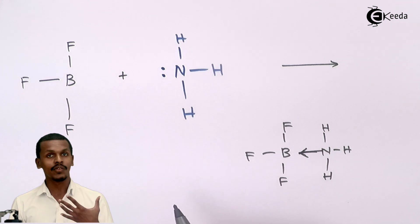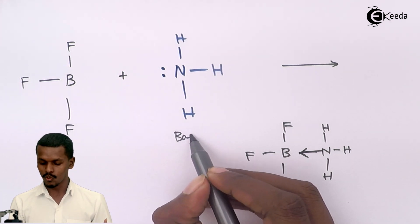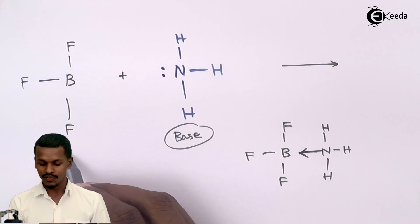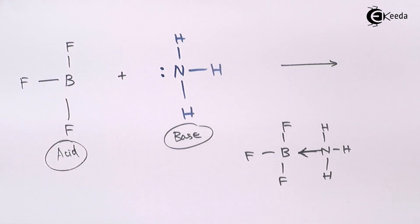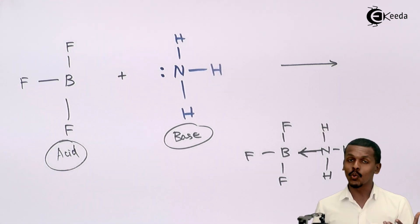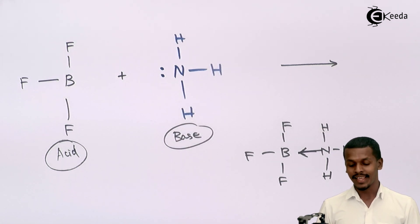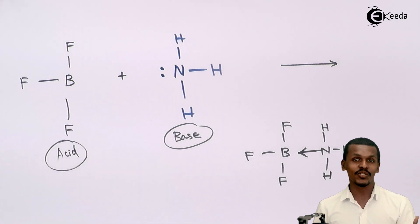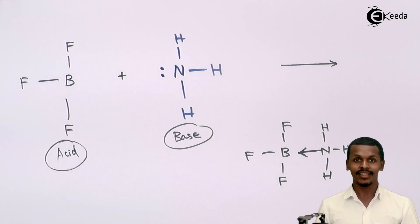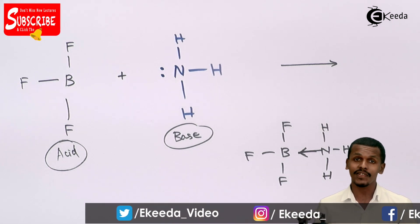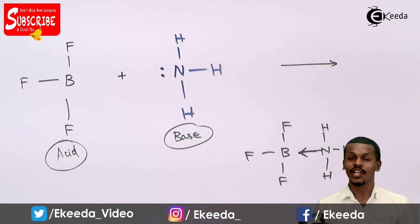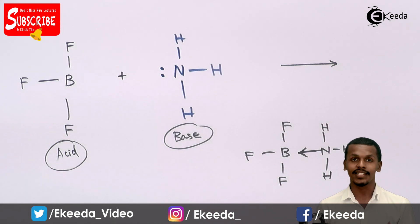In this reaction, NH₃ contains nitrogen that donates its lone pair of electrons, so it is a base. BF₃ accepts the lone pair of electrons, so it is an acid. Notably, NH₃ does not contain OH⁻ but still acts like a base, and BF₃ does not contain H⁺, so according to Arrhenius theory it should not be an acid — but still it acts like an acid.